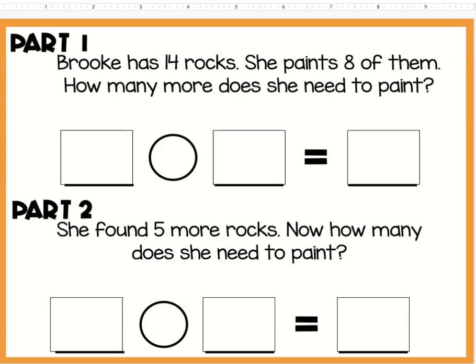Let's look at one more. Brooke has 14 rocks, so here we're going to put 14. Then she paints eight of them and it says how many more does she need to paint?